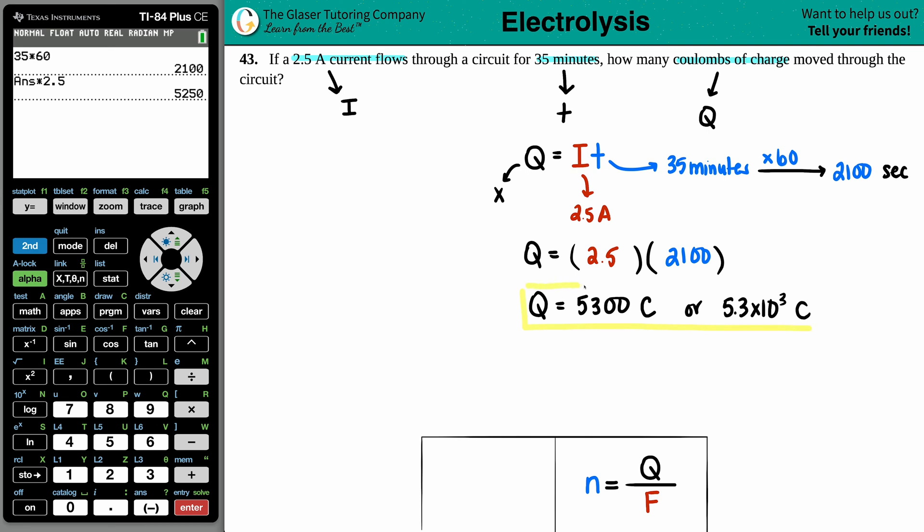Now let's just do one more formula. Let's introduce one more formula, even though they didn't state this here. But let's say the next question asks, how many moles of electrons are in the 5,300 coulombs, or the 5.3 times 10 to the 3rd coulombs. Now we're going to introduce a new formula. That's why I just wanted to quickly do this, because I want you to know two of the formulas for this chapter.